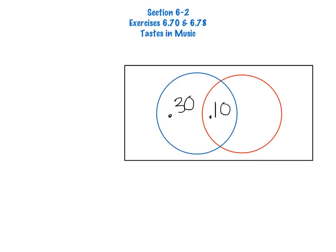Likewise, for the red circle, the 30% that like gospel music, 10% of them are already included in the middle, and so the part that is just gospel without liking country is .20.